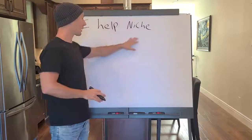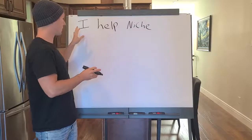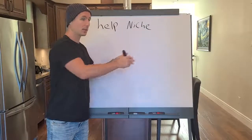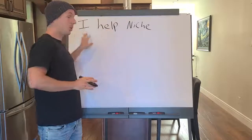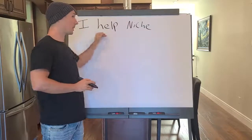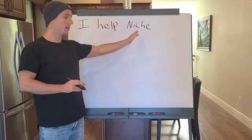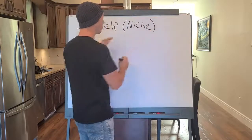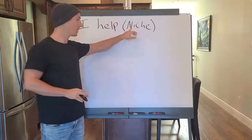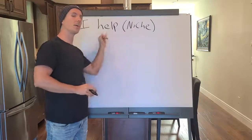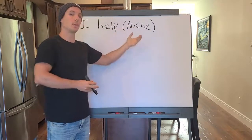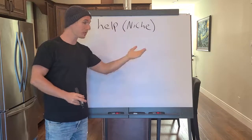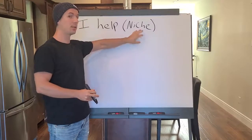A lot of people don't even nail that part. They screw up and say something like 'I enjoy helping people' — that's not an RMS sentence structure. The niche needs to be very clear. You don't say 'I help people.' I help what kind of people? I help moms. I help dads. I help dog owners. I help surfers. I help golfers. I help vegans. Put the niche there.